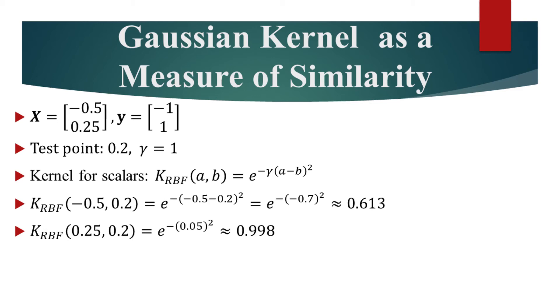For any positive gamma, closer examples A and B will have a larger RBF kernel than further examples. Let's now derive the space of this kernel.